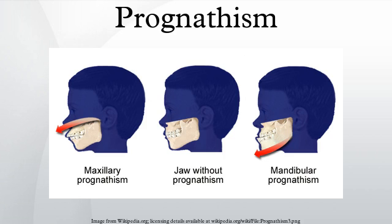The word prognathism derives from Greek 'Pro' and 'Gnathos'. One or more types of prognathism may result in the common condition of malocclusion, in which an individual's top teeth and lower teeth do not align properly.